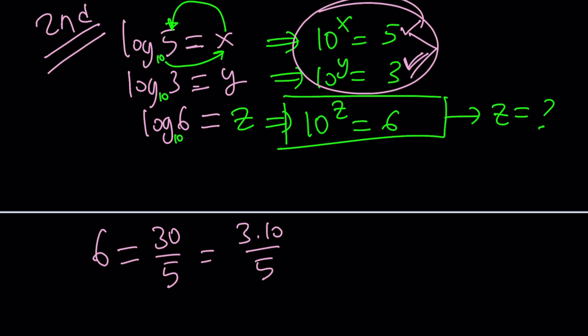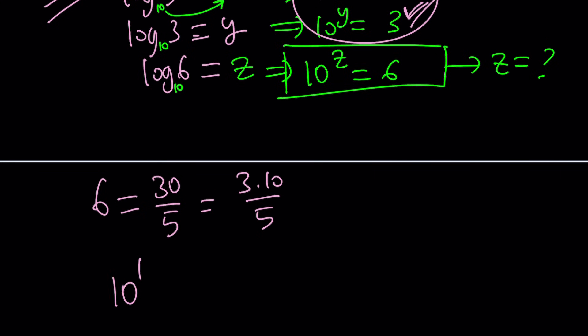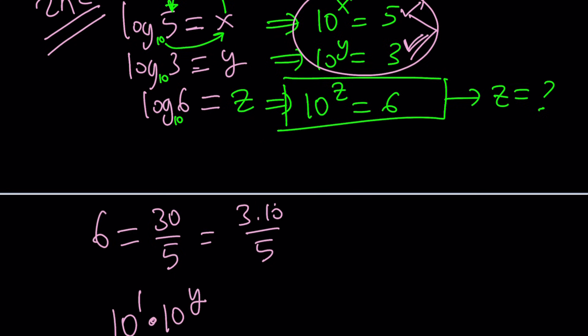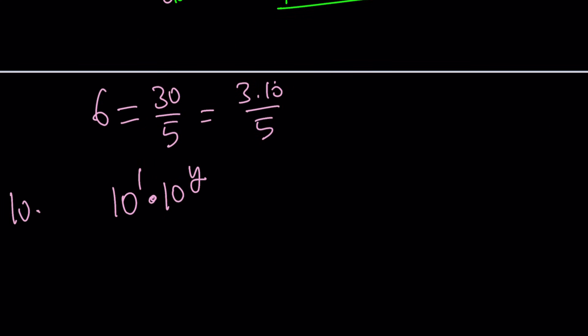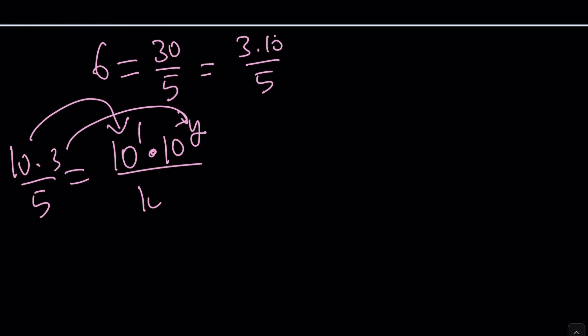To get the 10 in the numerator, I do need to do this. 10 to the power of 1. I need a 3, which is 10 to the power of y. So I'm basically doing it like this. 10 times 3 divided by 5. This is 10. This is 3. And 5 is 10 to the power of x. And guess what? This gives you 10 to the power of 1 plus y divided by 10 to the x. Now I'm going to subtract the exponents. Remember the rules of exponentials. And now, this should be the answer.